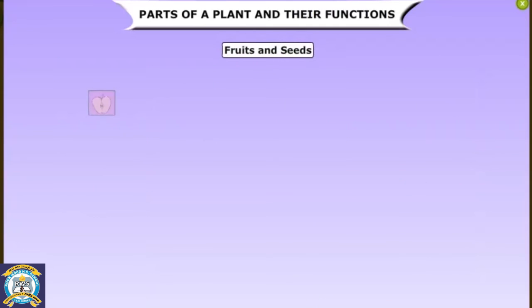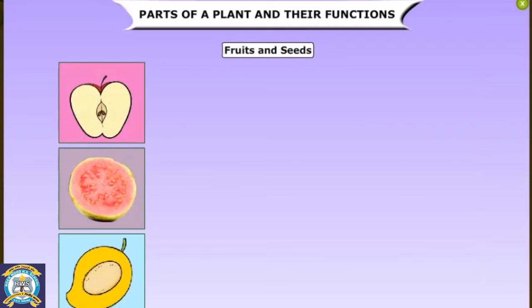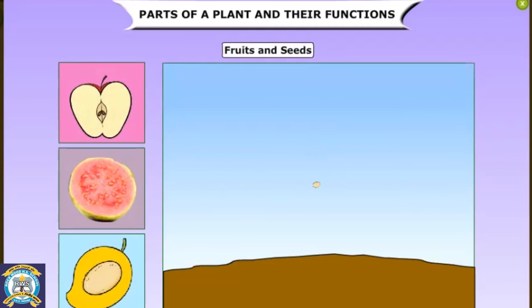Fruits come in many shapes, sizes, and colors. Fruits protect the seeds that are found inside them. Fruits can have one seed or many seeds. Some fruits, such as mangoes, have only one seed. Apples and oranges have many seeds. Mature seeds can grow into new plants.